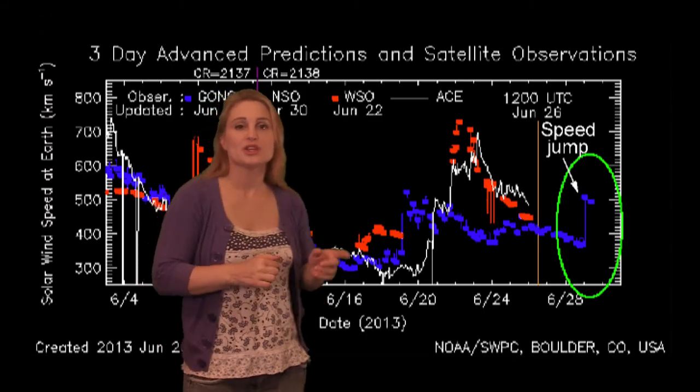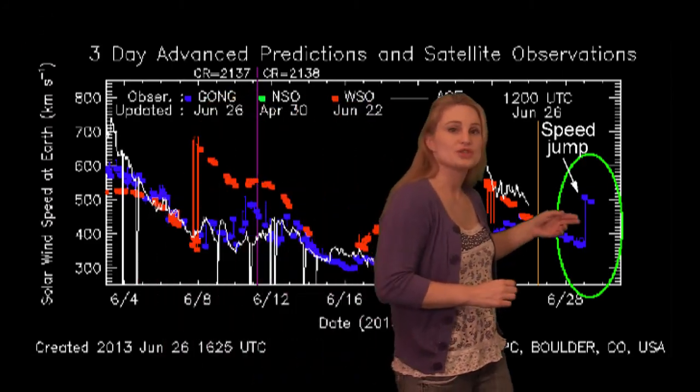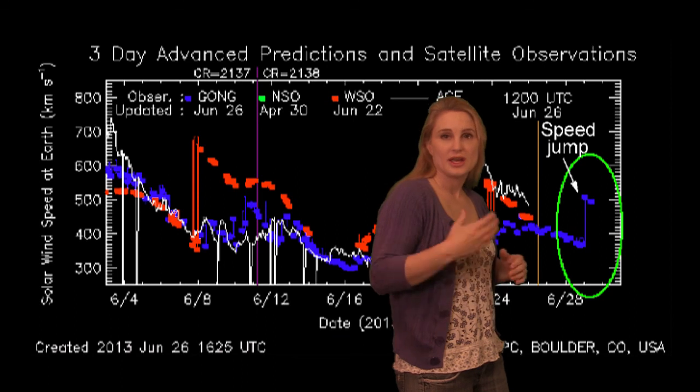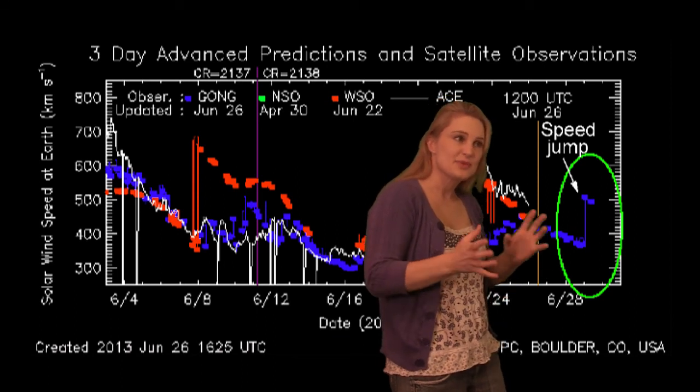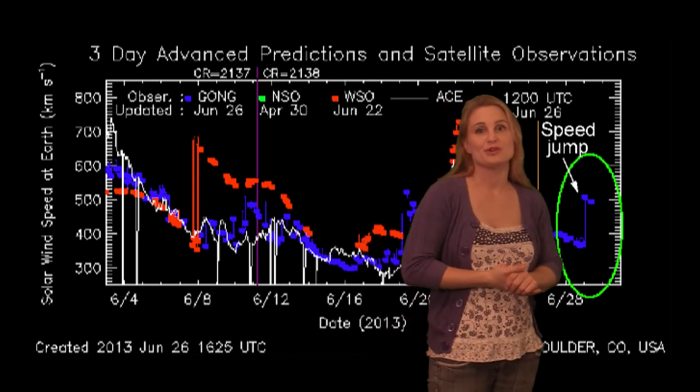Now, the real story is the coronal hole that's been rotating into view over the past few days. That coronal hole has now reached center disk, and we should expect some high-speed solar wind hitting the Earth around the 27th all the way through maybe the 29th. Prediction models right now are showing a shock hitting us on the 29th, which means maybe a geomagnetic storm is in our future.